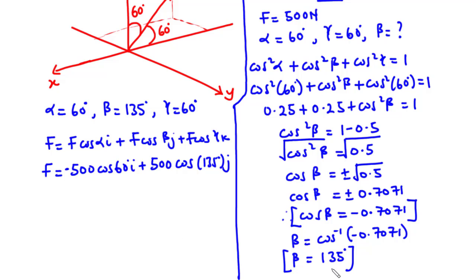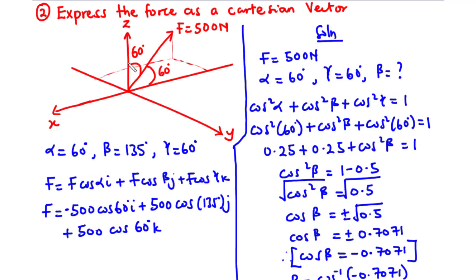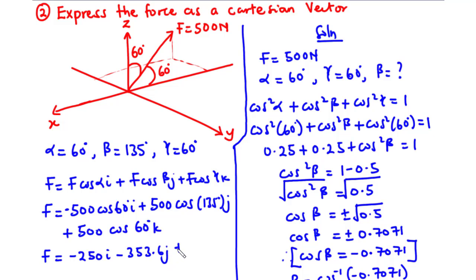Continuing with +500cos60·k, since the force is directed along the positive z-axis there is no issue. Simplifying: −500cos60 = −250, so we have −250i. Then 500cos135 = −353.6, giving −353.6j. And 500cos60 = 250, giving +250k. So the Cartesian vector representation of force F is: F = −250i − 353.6j + 250k newtons.